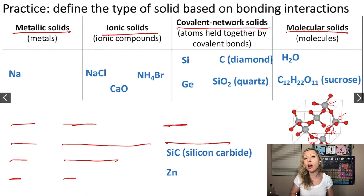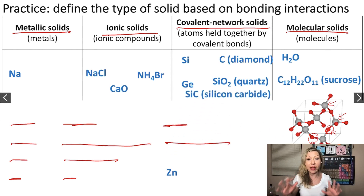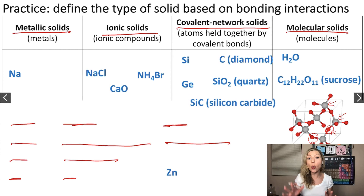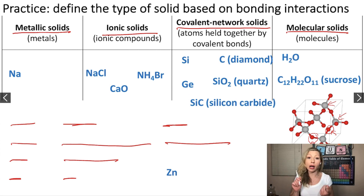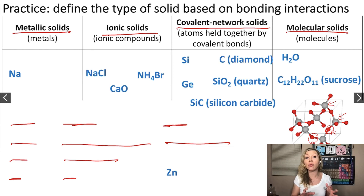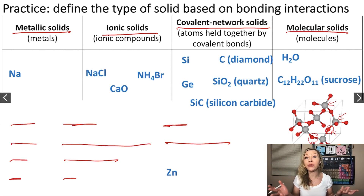What about silicon carbide? Silicon carbide is going to do the same thing — it's going to be a covalent network solid. So if you remember carbon, metalloids, quartz, and silicon carbide as covalent network solids, you've covered most of the covalent network solids that will come up in Gen Chem.